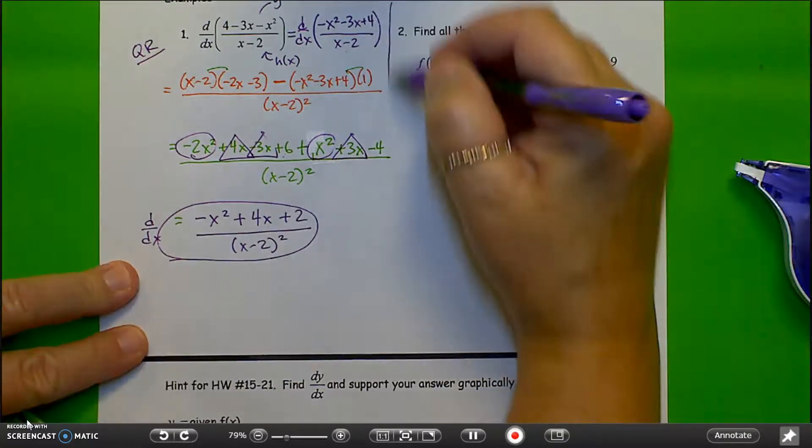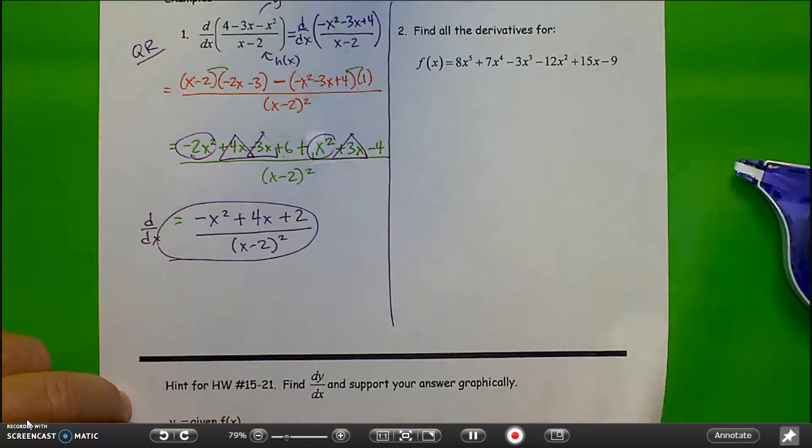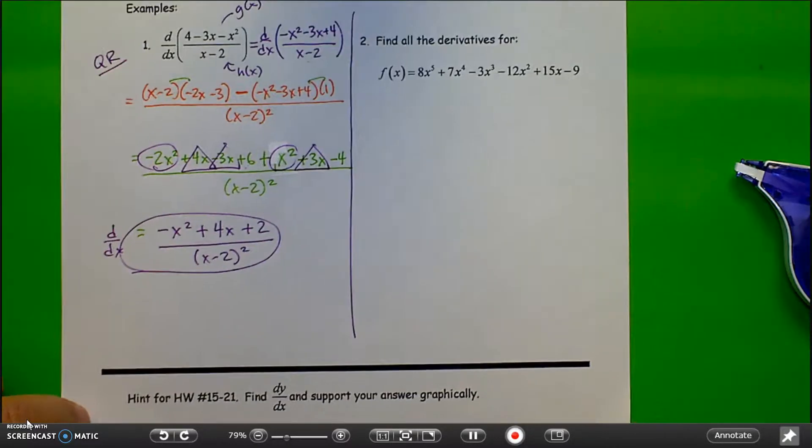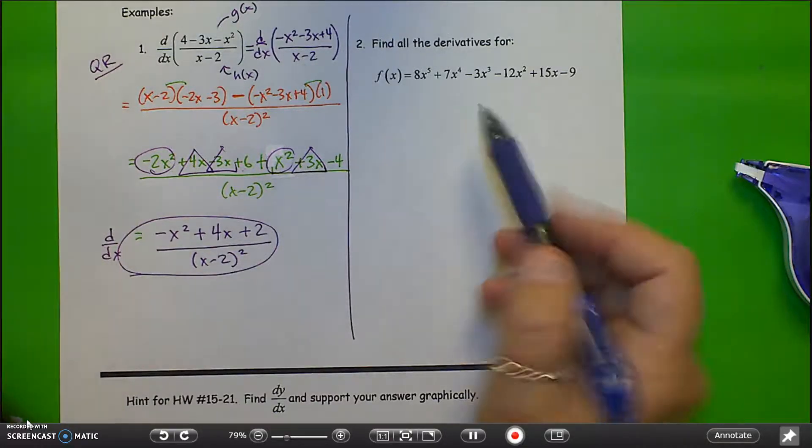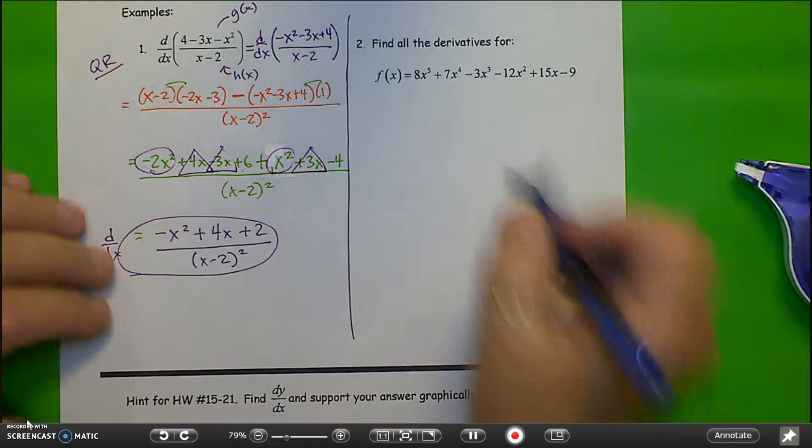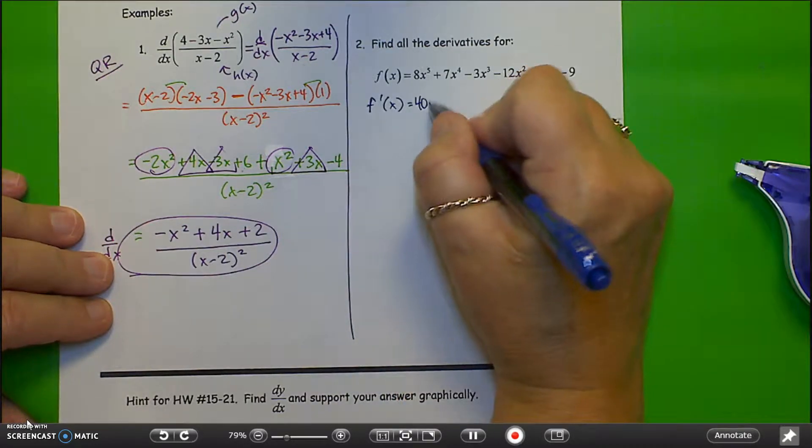Okay, next one. This problem is asking us to find all the derivatives for this large polynomial. Basically, this is just repeated use of the power rule. So my first derivative, f prime of x,